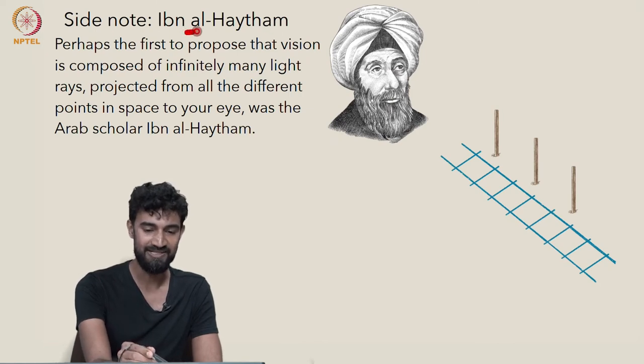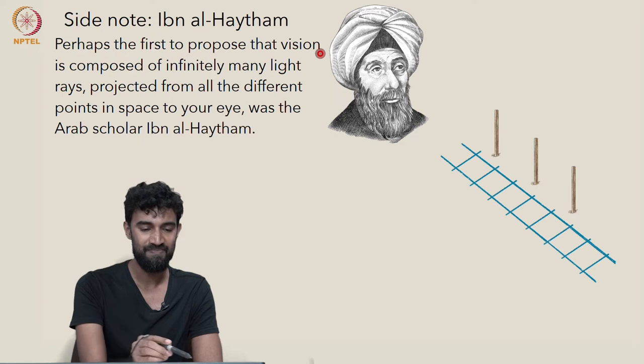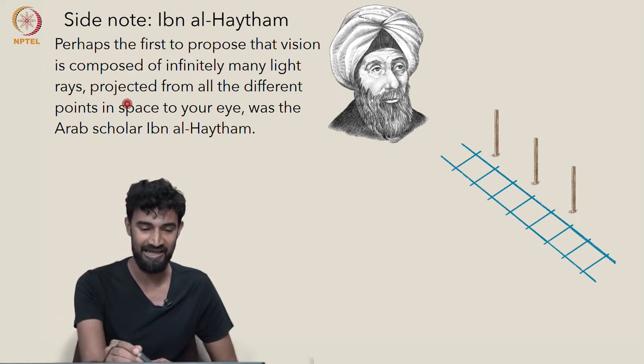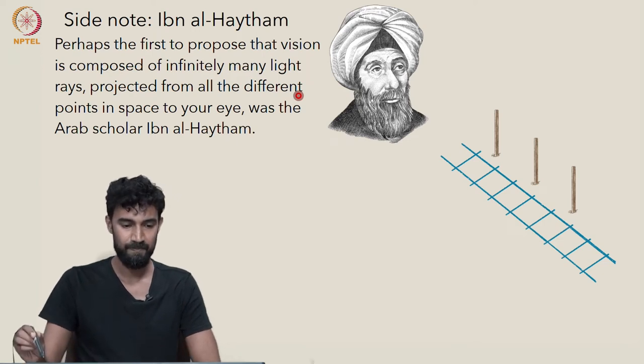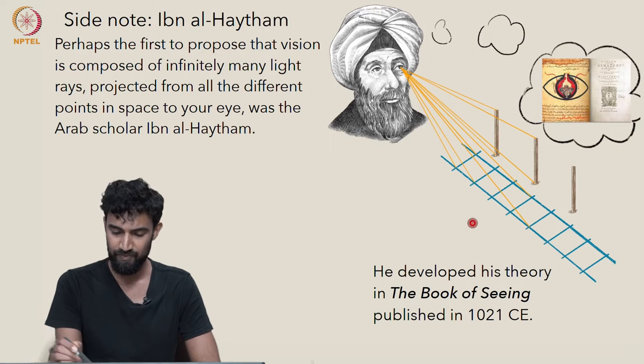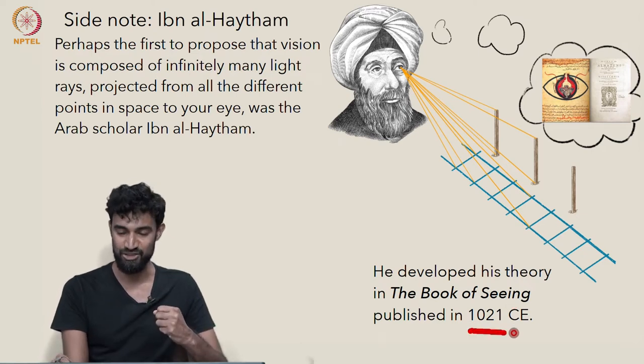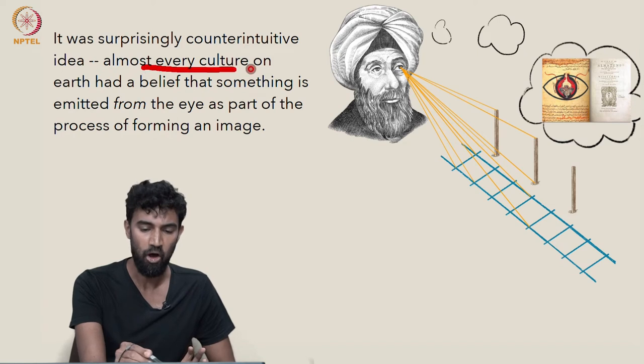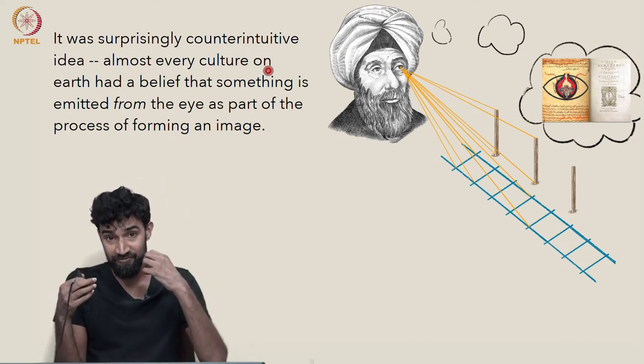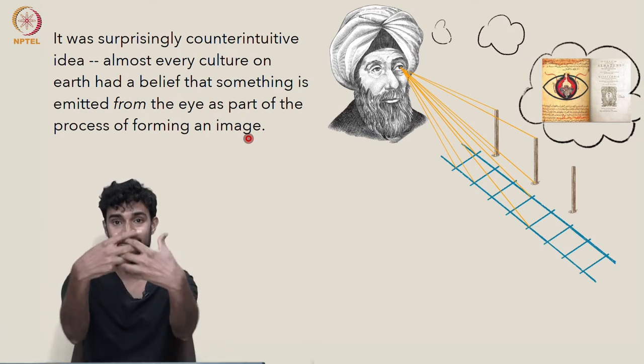And it's an interesting side note that the mathematician and philosopher Al-Haytham was perhaps the first to propose that vision is composed of infinitely many light rays projected from all the different points in space to your eye. This idea was a crucial part of his theory of optics that he developed in the Book of Seeing, which he published a little over a thousand years ago in 1021 CE. So it was actually a surprisingly counterintuitive idea at the time. Almost every culture on Earth had a belief that something is emitted from your eye in the process of forming an image, not that many, many, many light rays are coming to your eye from every point in space.